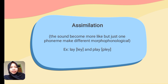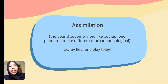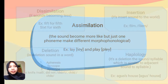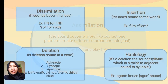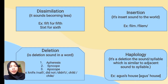For example, the words 'lay' and 'play'. The difference between them is in the 'p' sound. 'Lay' and 'play'. The next type is dissimilation. Dissimilation is when sounds become less alike.